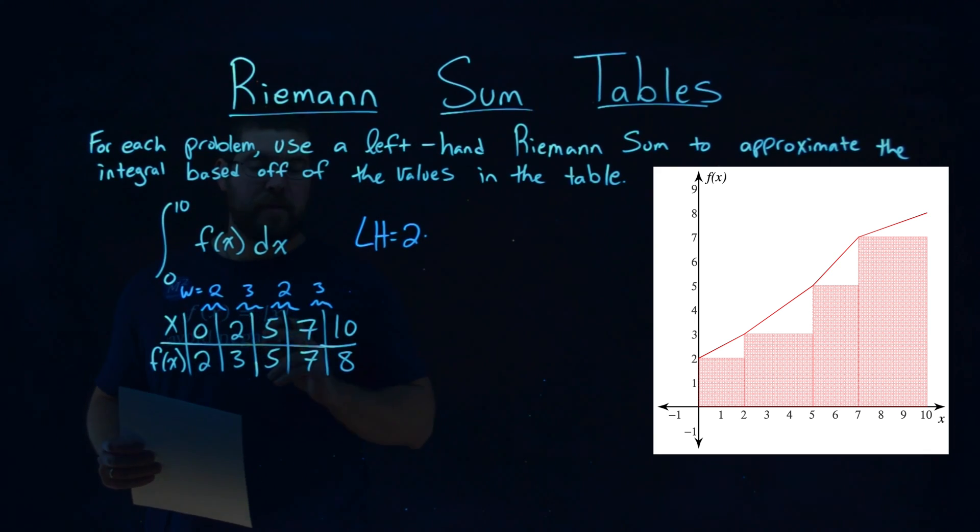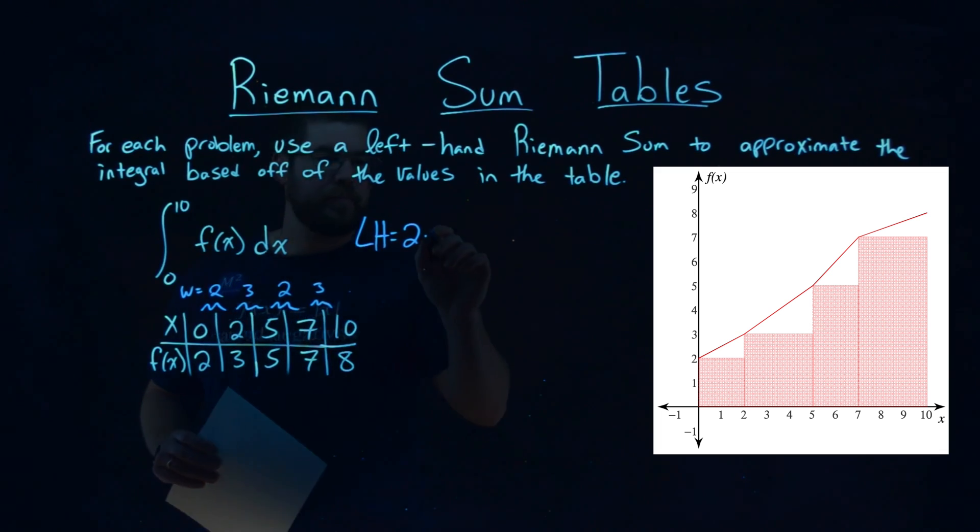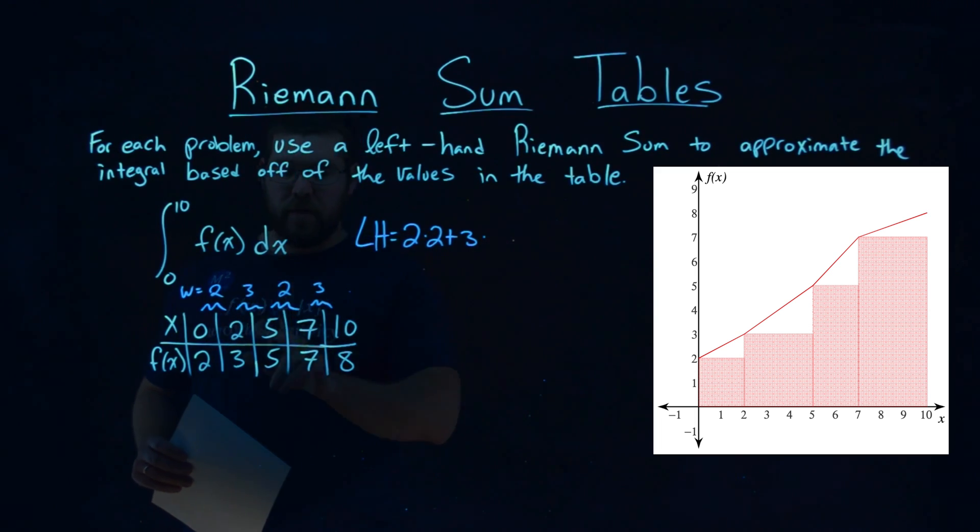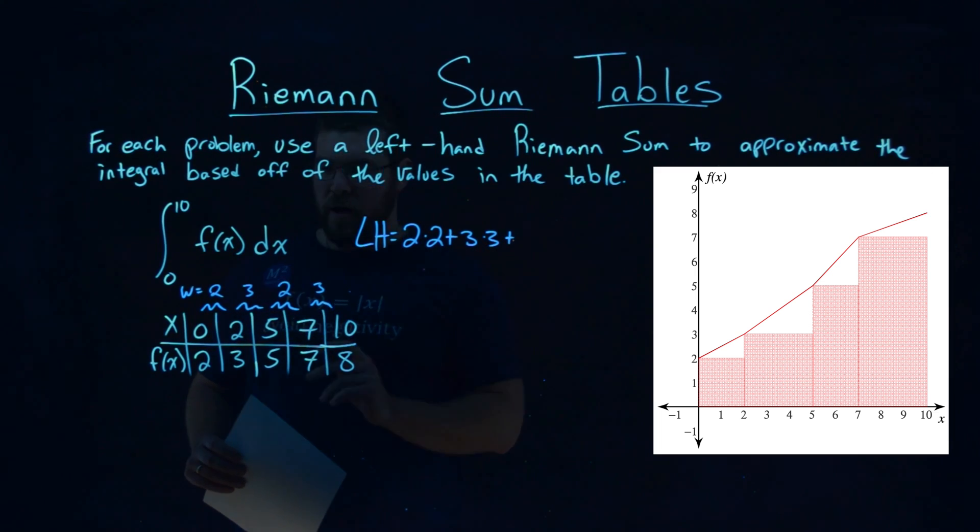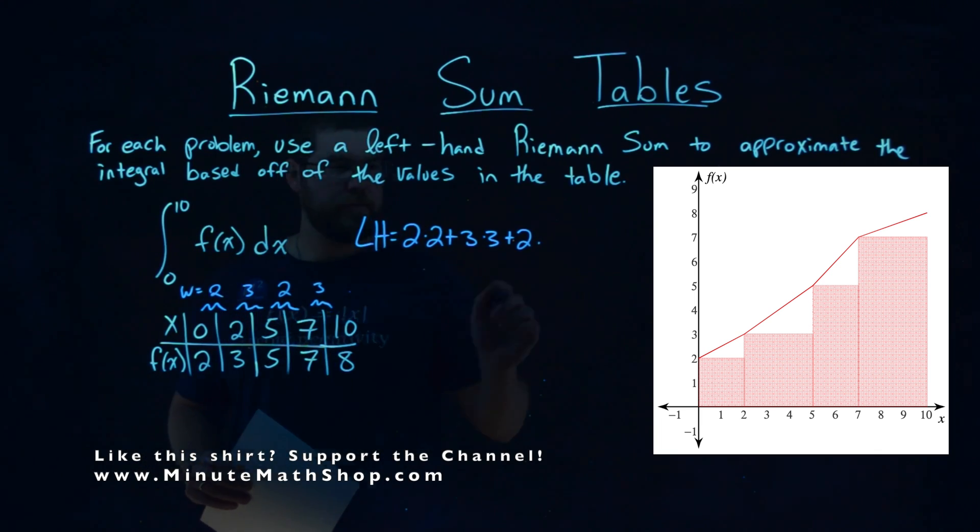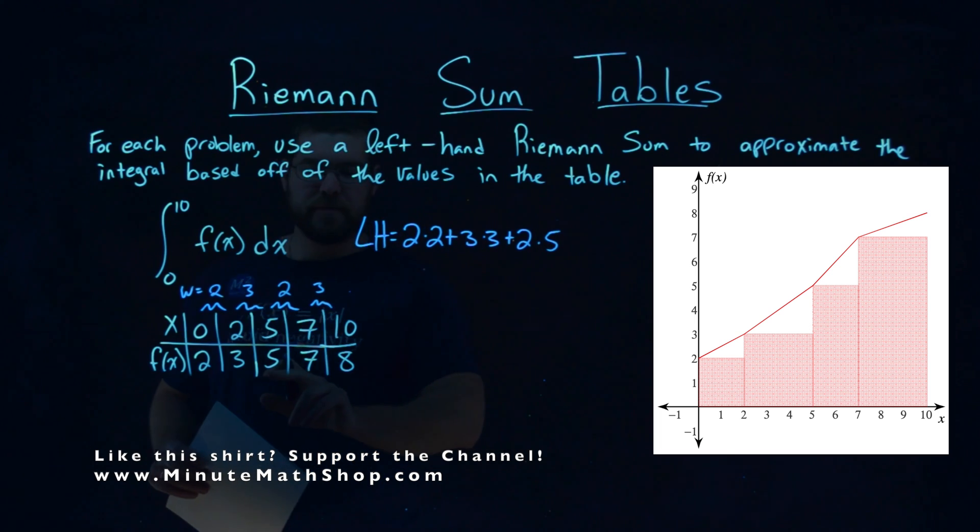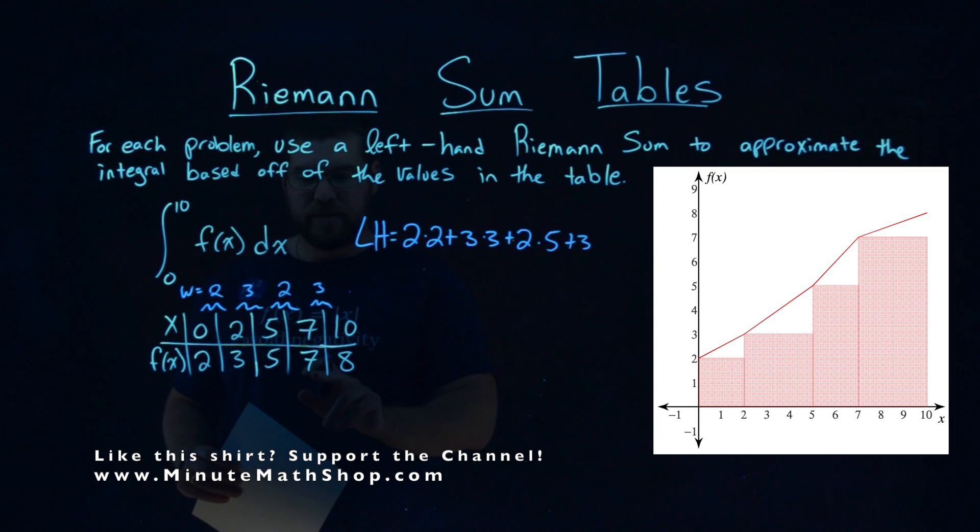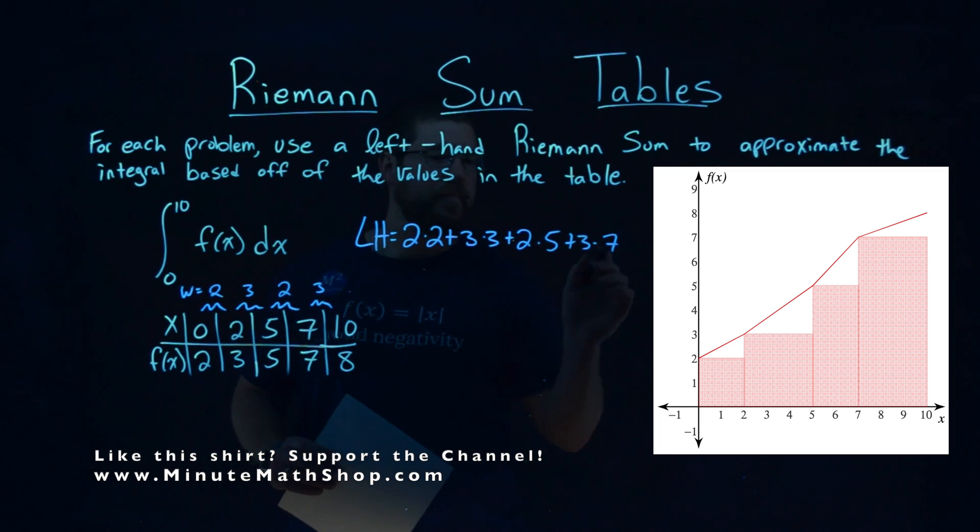Now I said it's a left-hand Riemann sum, so I go to the y value, or the f of x value, on the left-hand side, which is 2. Plus the next width, which is 3, times the left-hand Riemann sum, which is that 3 value here. Plus the width of 2 times, again, left-hand, 5, the height value. And the last width is 3, times its height, which is 7 on the left.